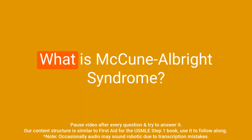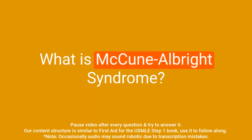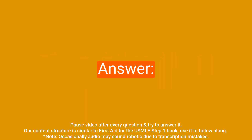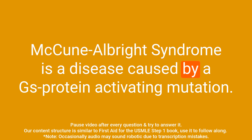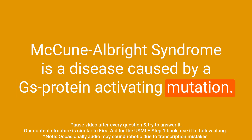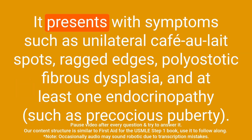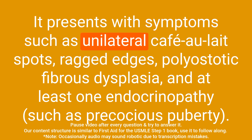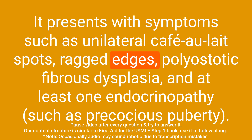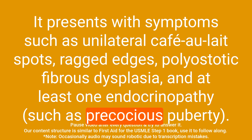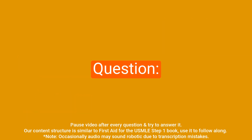Question: What is McCune-Albright syndrome? Answer: McCune-Albright syndrome is a disease caused by a Gs protein activating mutation. It presents with symptoms such as unilateral café-au-lait spots with ragged edges, polyostotic fibrous dysplasia, and at least one endocrinopathy.